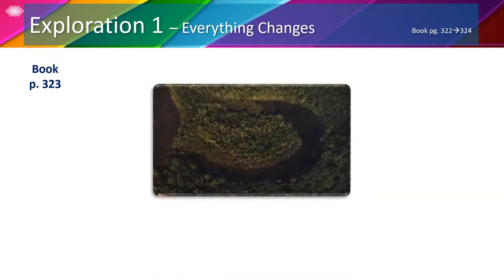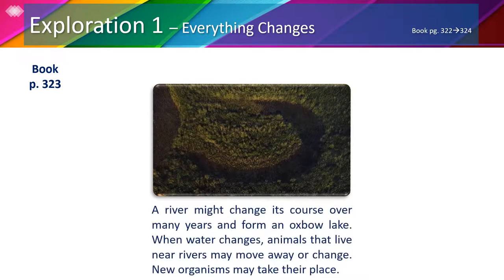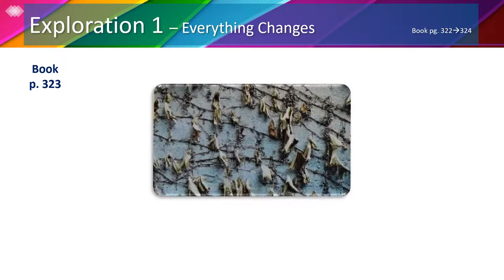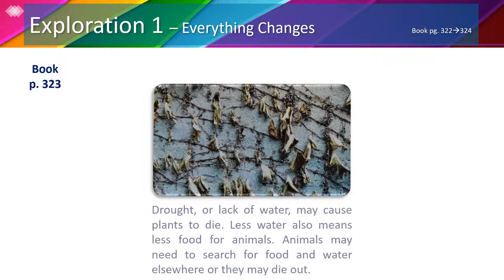In the second picture, we can see an oxbow lake. A river might change its course over many years and form an oxbow lake. When water changes, animals that live near rivers may move away or change, and new organisms may take their place. In the third picture, we can see some dead plants. Drought or lack of water may cause plants to die. Less water also means less food for animals. Animals may need to search for food and water elsewhere, or they may die out.